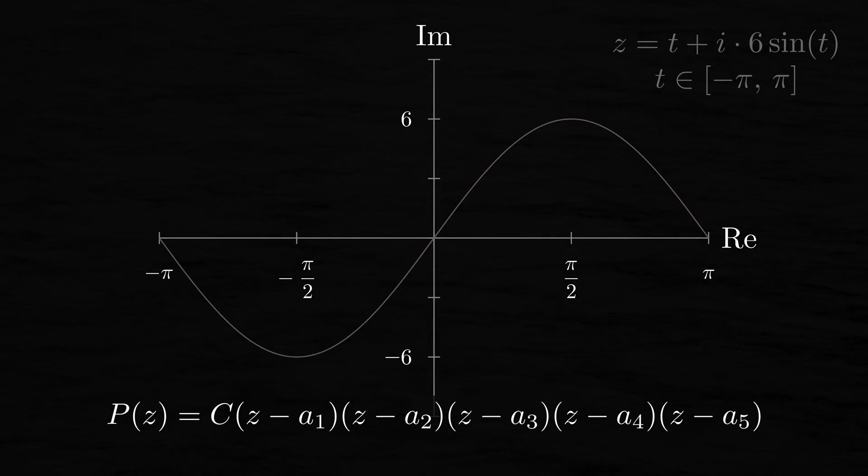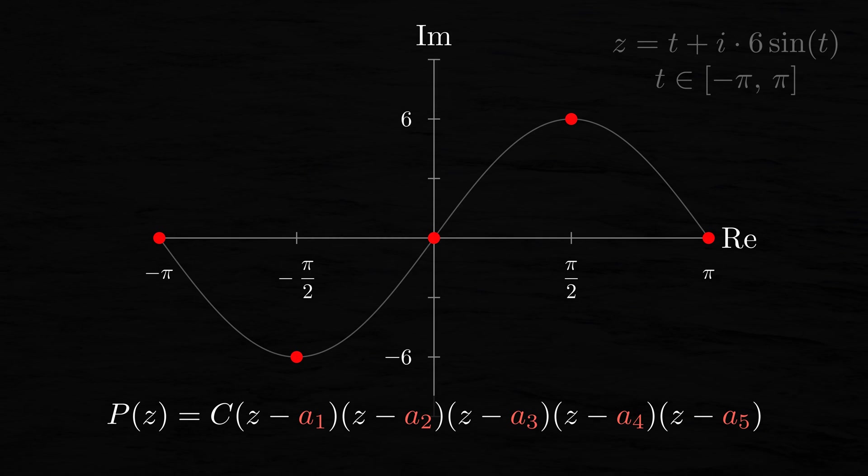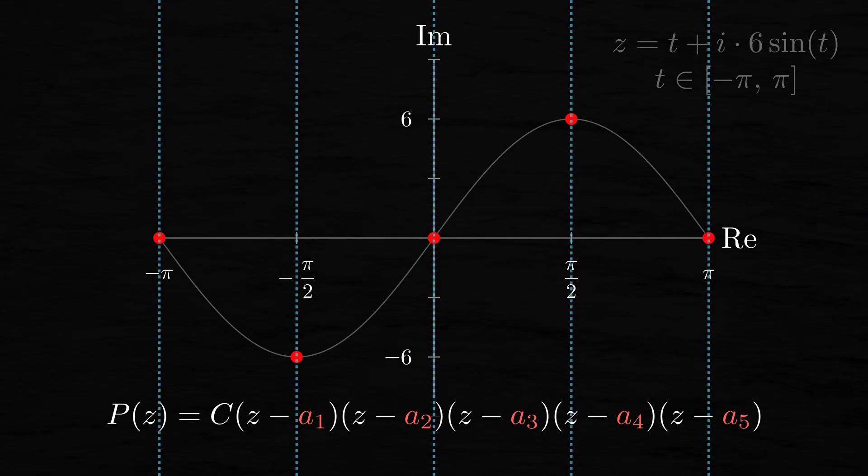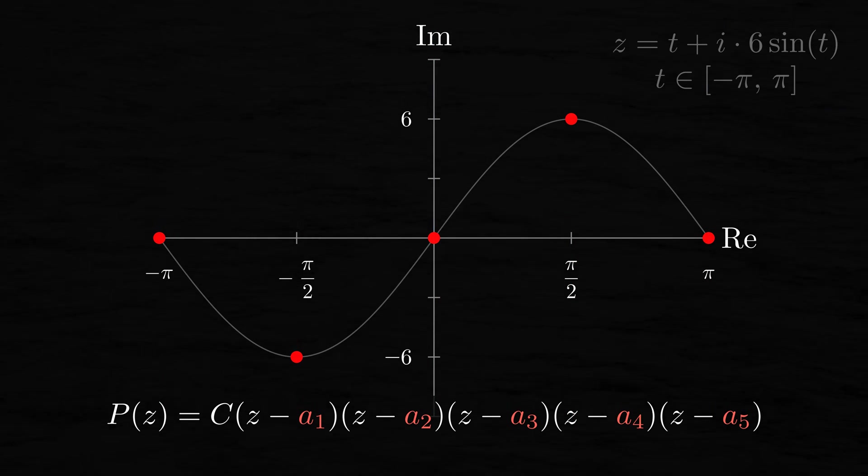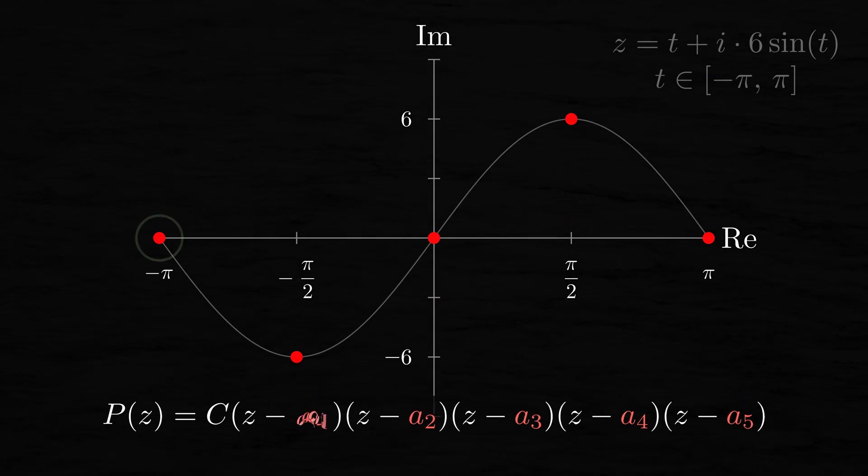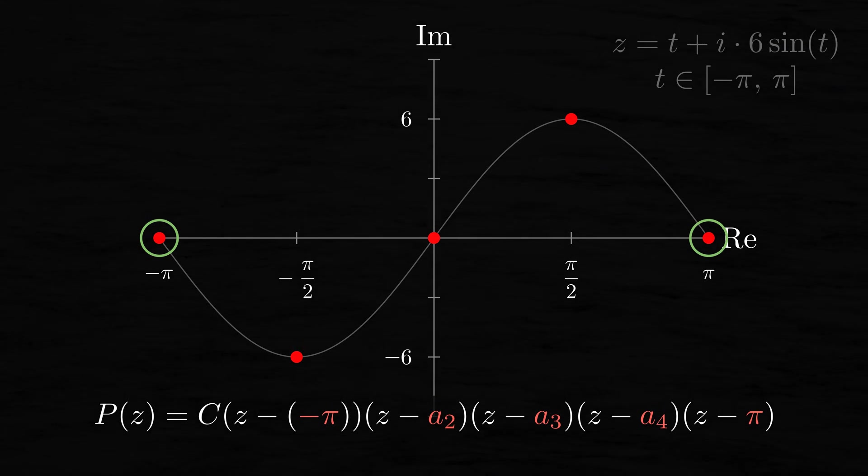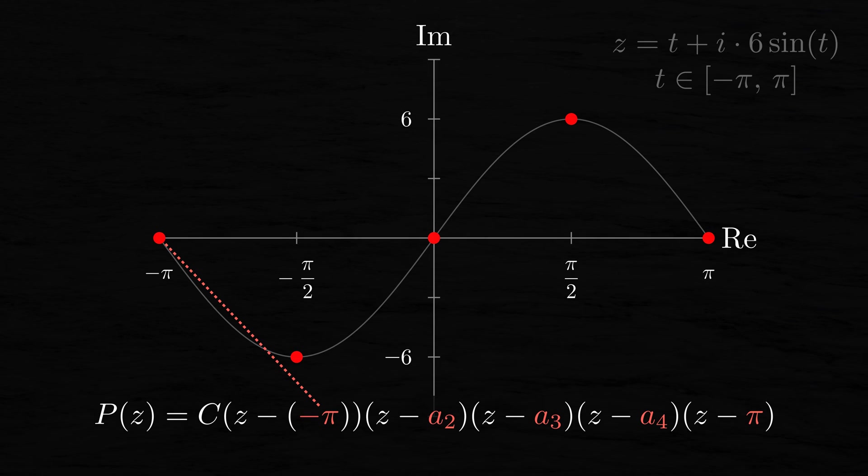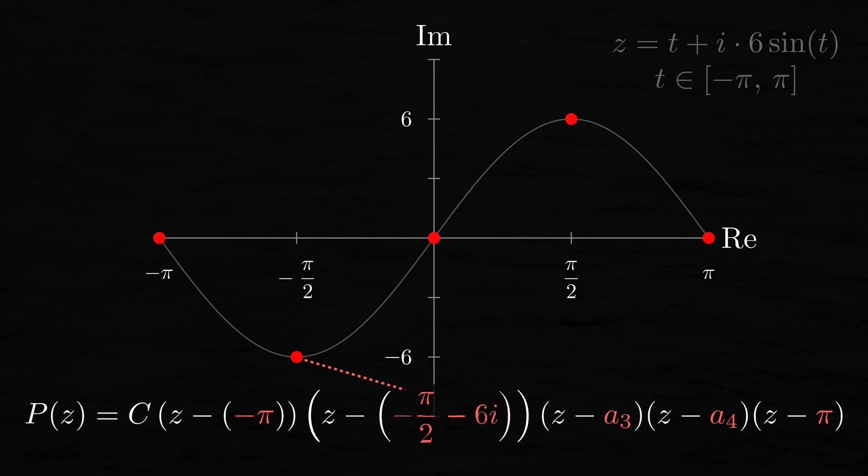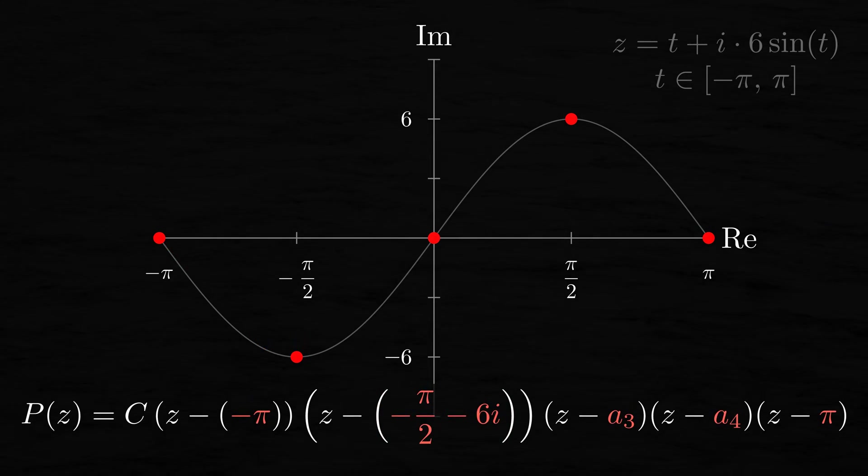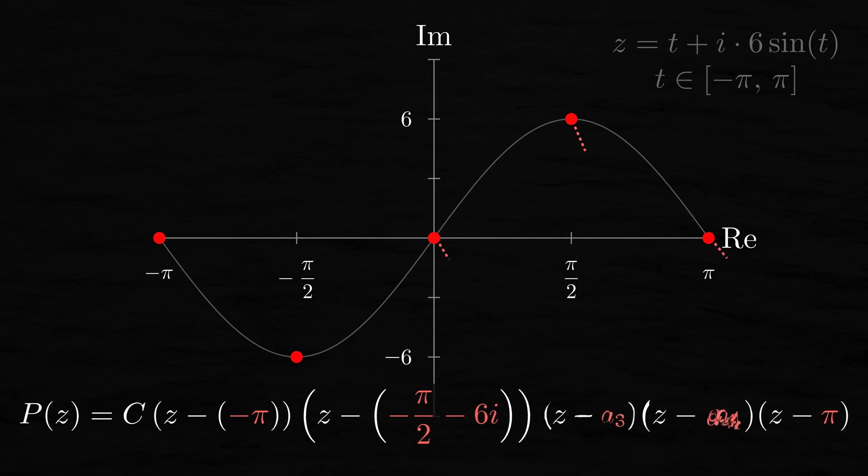Now, consider a polynomial p of z with, say, five zeros on this curve, such that its zeros are evenly spaced along the real axis. Furthermore, we want a zero at the starting point z equals negative pi, and another zero at the endpoint z equals pi. In this case, the polynomial is some non-zero constant c, times z minus the first zero, which is negative pi, times z minus the second zero, which is negative pi over 2 minus 6i, and so on.